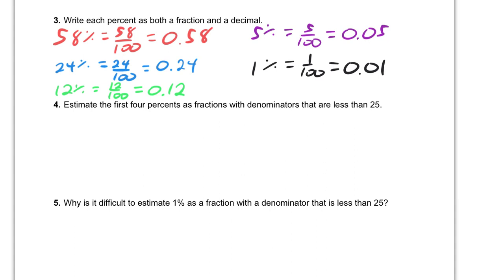Now it asks us to estimate the first 4% as fractions with denominators that are less than 25. Okay, so the first one, 58%, is very close to a nice friendly number of 60%, and I know that 60% is 60 out of 100, and that can be simplified, right? All we need to do is divide each of these by 10, and we can get an equivalent fraction with a denominator of 10. And there it is. I could simplify it further, but it just needs to be lower than, the denominator just needs to be less than 25.